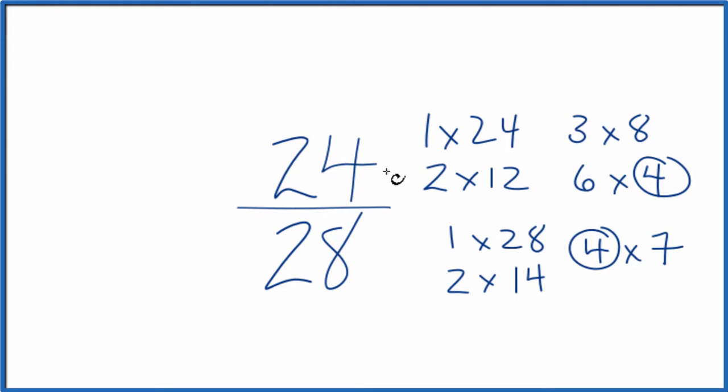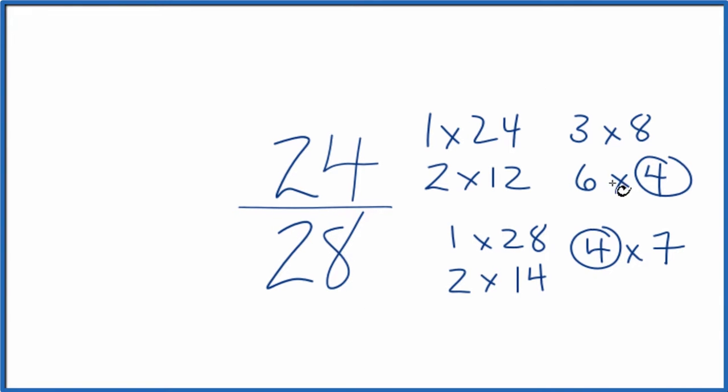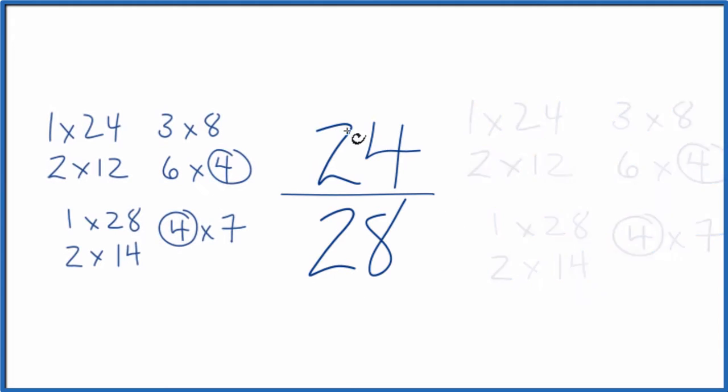So we divide 24 by 4, 28 by 4, and we'll have simplified 24 over 28. Let's move these over here.